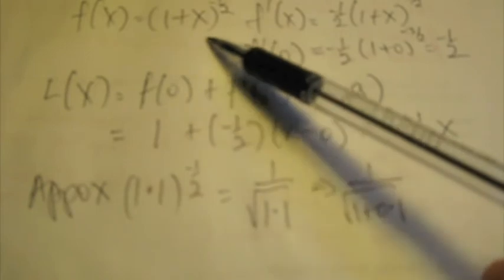And now we have it looking like our function, as you can see here, 1 plus x to the -1/2. And of course it would be like this. And this implies that x is equal to 0.1.